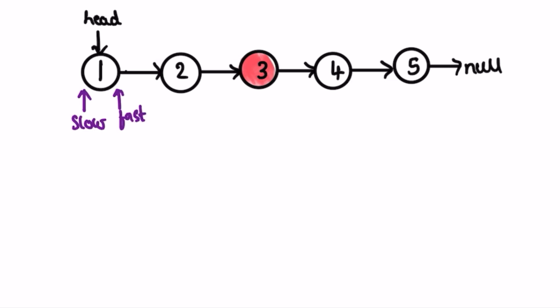The idea is that the fast pointer moves at 2x speed compared to slow — if slow moves one node to the right, fast moves two nodes. The iteration runs until fast and fast.next are not equal to null. In each iteration, slow moves to slow.next and fast moves to fast.next.next. So after the first iteration, fast has moved two positions.